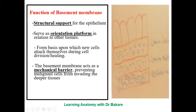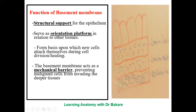The functions of the basement membrane include giving structural support to the lining epithelial cells and serving as an orientation platform onto which the epithelium is lined. Without a basement membrane, the configuration of the alignment would not be smooth and perfect, but the basement membrane provides perfect orientation so that the cells are well arranged.